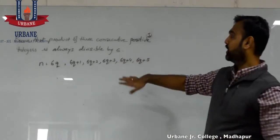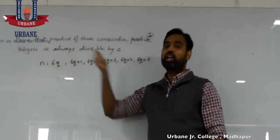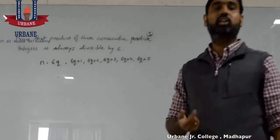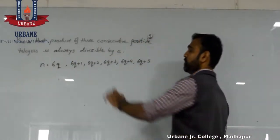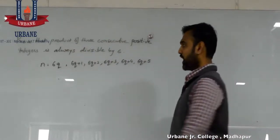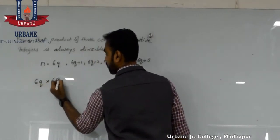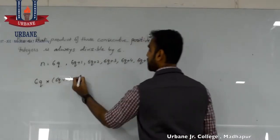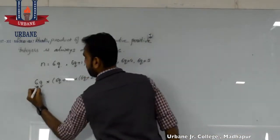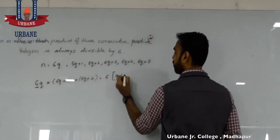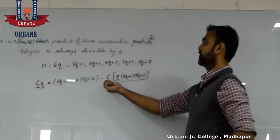So the possible remainders are either 0, 1, 2, 3, 4 or 5, and any number can be expressed in these forms. Now let's look at the product of three consecutive integers. Let's start from 6q as a number. The next consecutive integer is 6q plus 1, and the next is 6q plus 2. The product of these three is obviously divisible by 6, because 6 can be taken as a common factor, leaving q into 6q plus 1 into 6q plus 2 as the integer part.